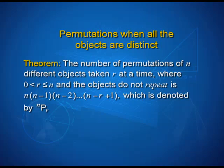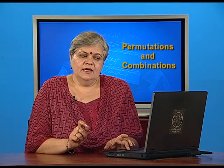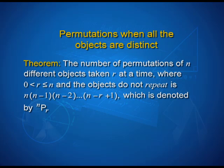The result says that the number of permutations of n different objects taken r at a time, where r is greater than 0 but less than or equal to n and the objects do not repeat, is given by the product n × (n−1) × (n−2) × … × (n−r+1). This quantity is denoted as nPr, also written by some authors as P(n, r).